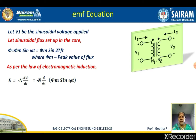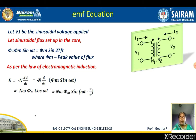Substituting φ = φM sin(ωt) and differentiating: since ωφM is constant, we take it outside. Differentiating sin(ωt) gives ω cos(ωt), so we get E = −NωφM cos(ωt). Now, cos(ωt) can be written as sin(ωt − π/2), so E = −NωφM sin(ωt − π/2). The two negatives cancel, giving E = NωφM sin(ωt − π/2).